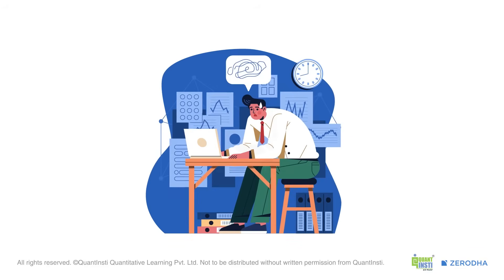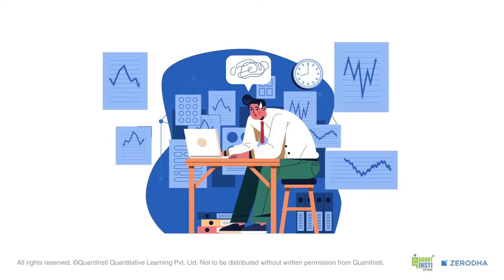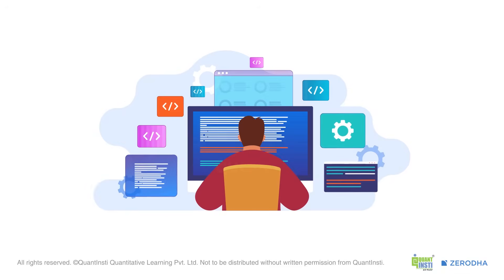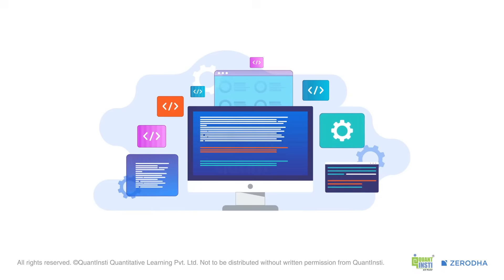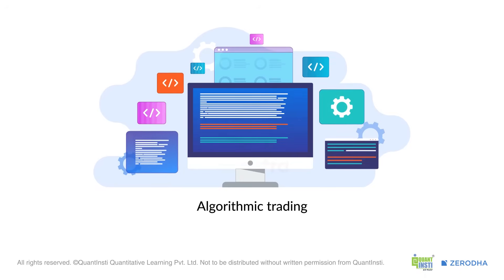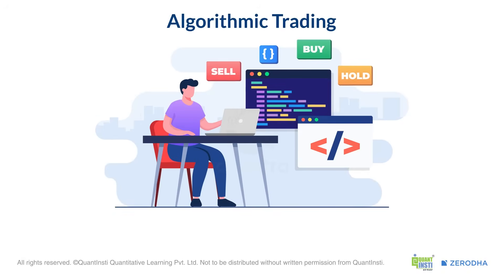Have you ever tried to track multiple stocks, news headlines, and market trends all at once, looking for perfect trading opportunities? It's nearly impossible for a human. But a huge part of today's stock market trading isn't done by people — it's done by incredibly fast and smart computer programs, all with the help of algorithms. By the end of this video, you'll know exactly what algo trading is. Simply put, algo trading is all about implementing trading strategies in a disciplined manner using computer programs.